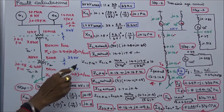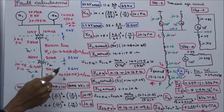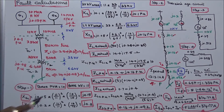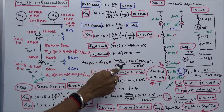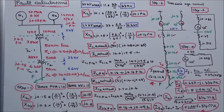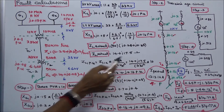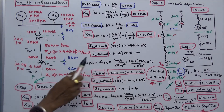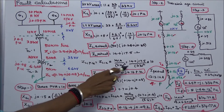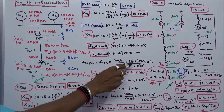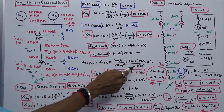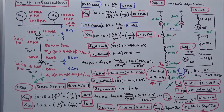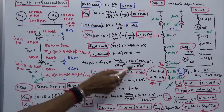Now I can calculate the per-unit impedance of Transmission Line 1. Taking the actual impedance 14 + j17.5, multiplied by MVA base of 10, divided by kV base squared (33²), the per-unit impedance of Transmission Line 1 is 0.13 + j0.16 per unit.